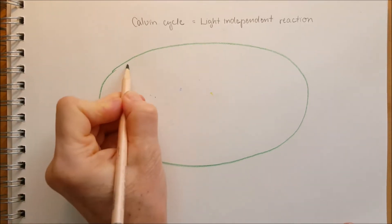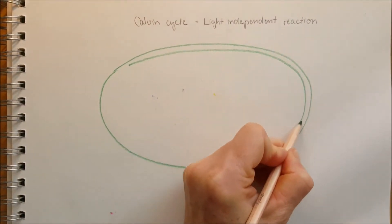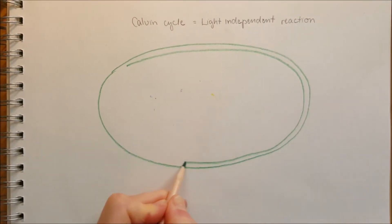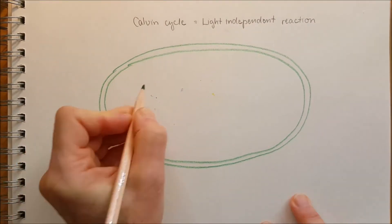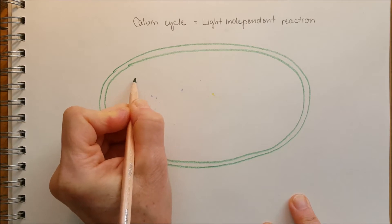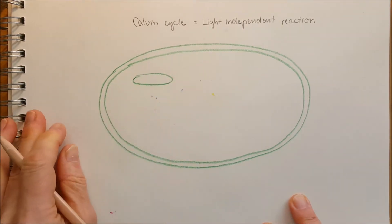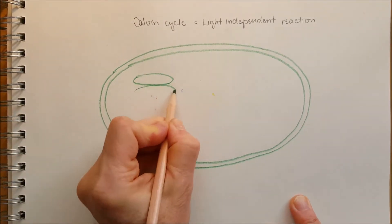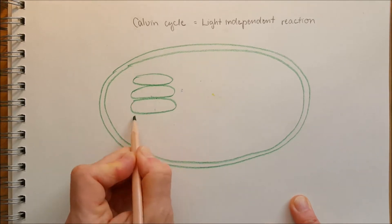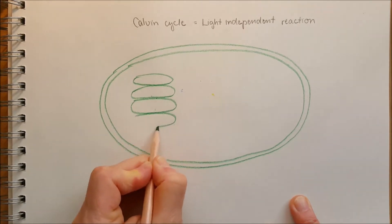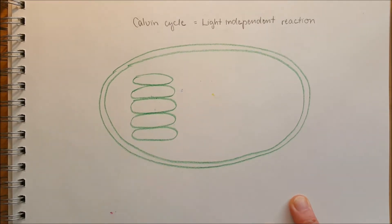Let's draw a chloroplast — the outer membrane and the inner membrane, and the thylakoids stacked on top of each other to form the granum.